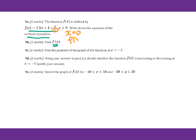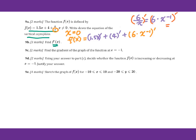So we get f prime of x. We do the derivative: 1.5x plus 4, then plus 6 over x. Remember you change 6 over x into 6 times x to the negative 1 power. When you do the derivative for this, you will get 6 times negative 1 times x to the negative 2. So you get negative 6 over x squared. The derivative of 1.5x will be 1.5, and the constant gives 0. So f prime of x equals 1.5 minus 6 over x squared.